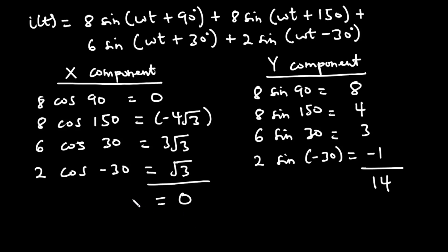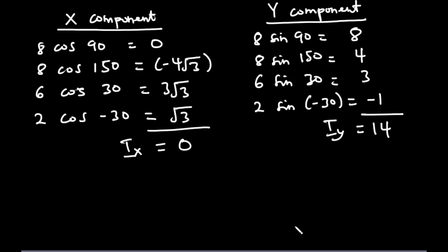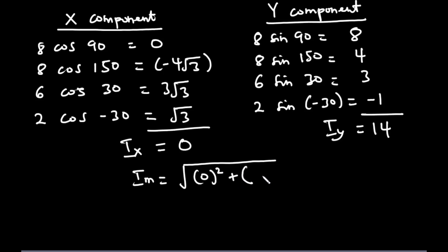With ix = 0 and iy = 14, the maximum value of the current is Im = √(0² + 14²) = 14 amperes.